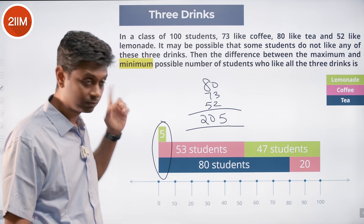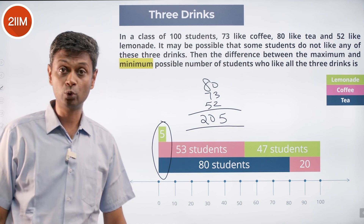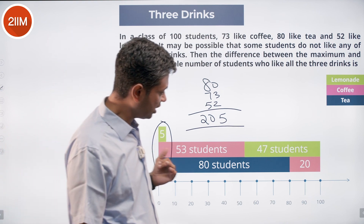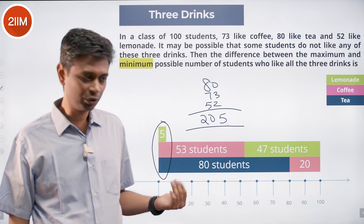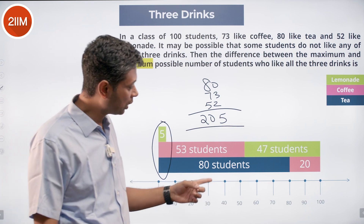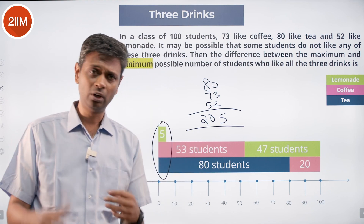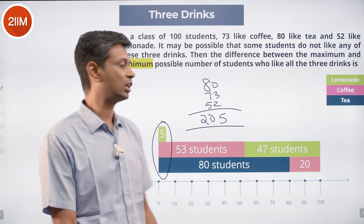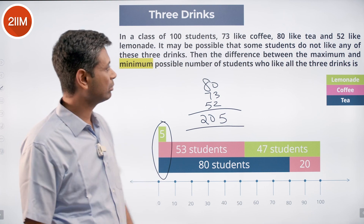So the best way to minimize the all-three group is: put tea drinkers first, then coffee drinkers with no overlap with tea stuck in the corner, then lemonade drinkers with no overlap with tea and coffee as much as possible. Only-tea and only-coffee are exhausted, and still 5 students remain — they go into the all-three region. The minimum is 5 and the maximum is 52. The difference is 52 − 5 = 47.